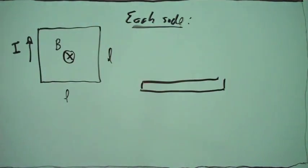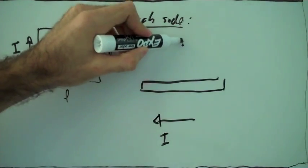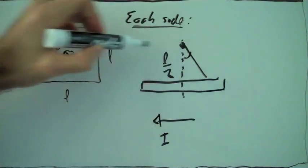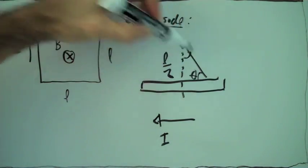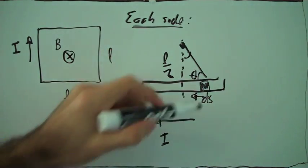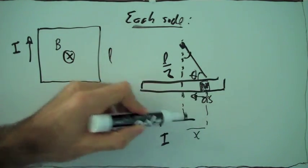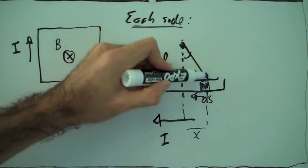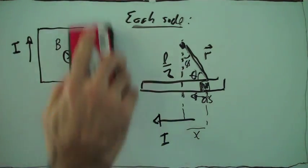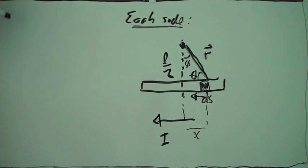For example, look at the bottom side. The current is flowing this way, and we want to know what field this side produces at this point, at the distance L over 2, which is at the center of the loop. Consider a little bit of current here, ds, and each little bit of current is at some distance x away from the center of that piece of loop, and at some distance r from the center of the square. We want to know the field produced only by this one side of the square loop.